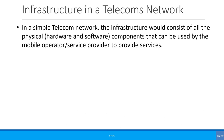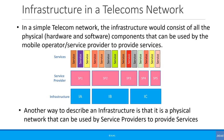In a simple telecom network, the infrastructure would consist of all the physical hardware and software components that can be used by the mobile operator or service provider to provide services. Another way to describe an infrastructure is that it is a physical network that can be used by service providers to provide services.